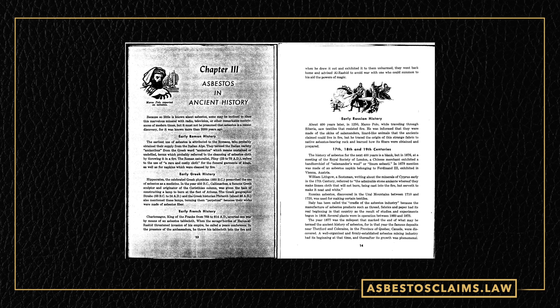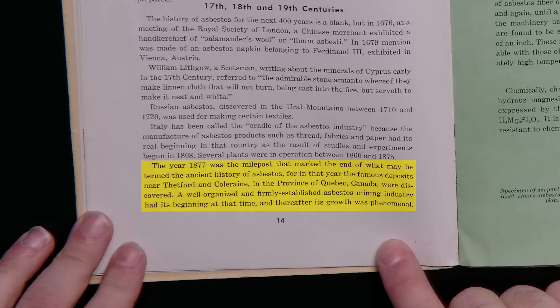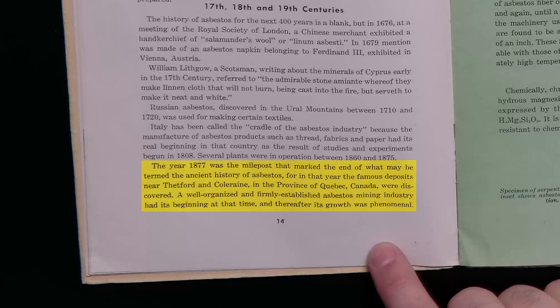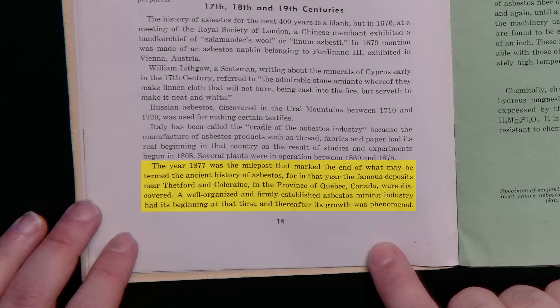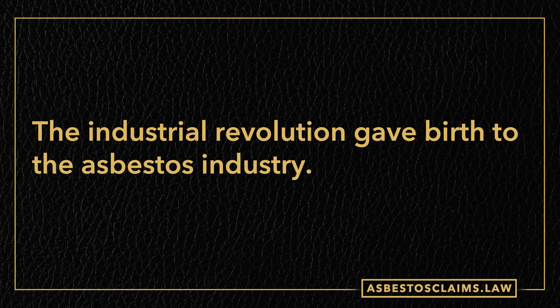Mr. Bowles writes that the year 1877 was the milepost marking the end of what may be termed the ancient history of asbestos. For in that year, the famous deposits near Thetford and Coleraine in the province of Quebec, Canada, were discovered. A well-organized and firmly established asbestos mining industry had its beginning at that time, and thereafter its growth was phenomenal. We're going to talk a lot about what happened in modern use in part two. But before that, let's talk about how the Industrial Revolution gave birth to the asbestos industry.